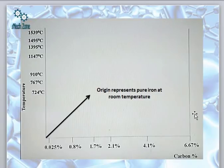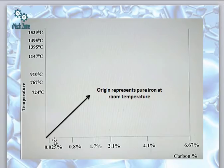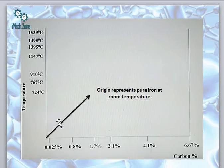Now this is how the iron-carbon diagram looks like. I have not drawn the complete diagram; we shall be drawing it step by step. This origin simply represents pure iron at room temperature. It is not representing zero degrees centigrade — it is simply representing that iron does not have any percentage of carbon and it is lying at the origin.